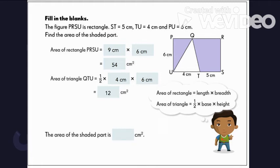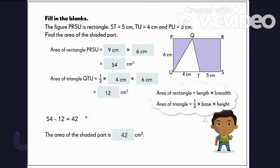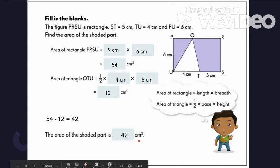Now that we are done getting the area of the rectangle and the triangle, let's subtract the area of the triangle from the area of the rectangle. So 54 minus 12 is equal to 42. Or simply, the area of the shaded portion is 42 square centimeters.